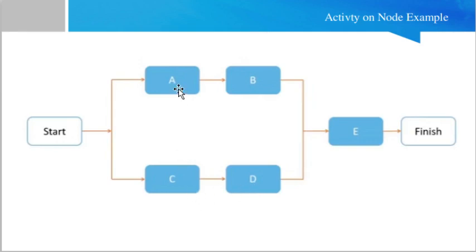Remember that both these activities, A and B, are in parallel to C and D. Once activity B and activity D finish, then activity E will start, and once activity E finishes, the project will finish. This is an example of activity on node.